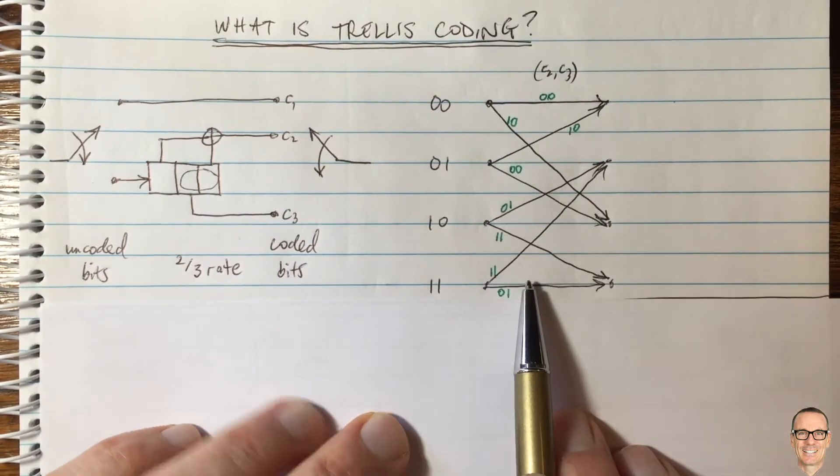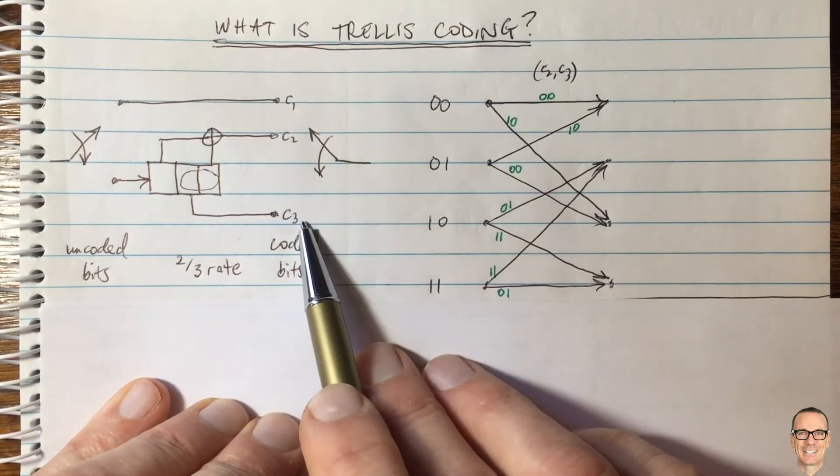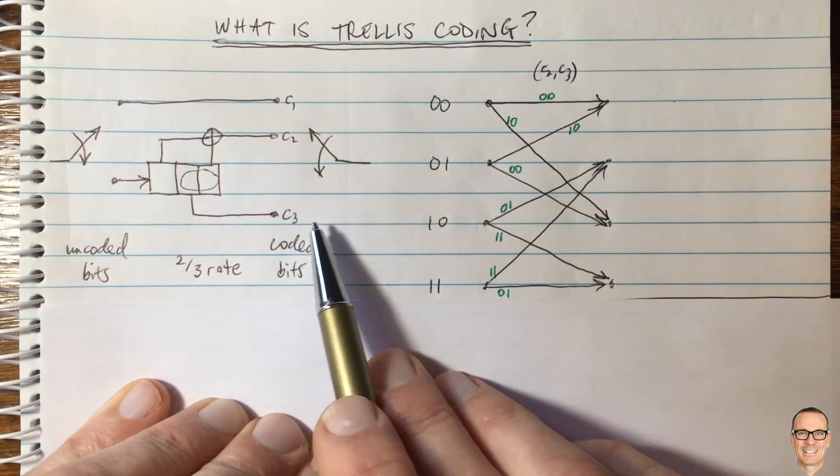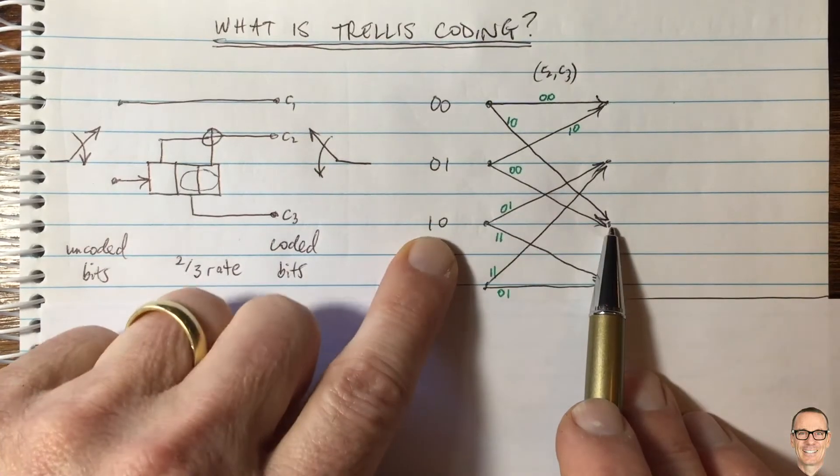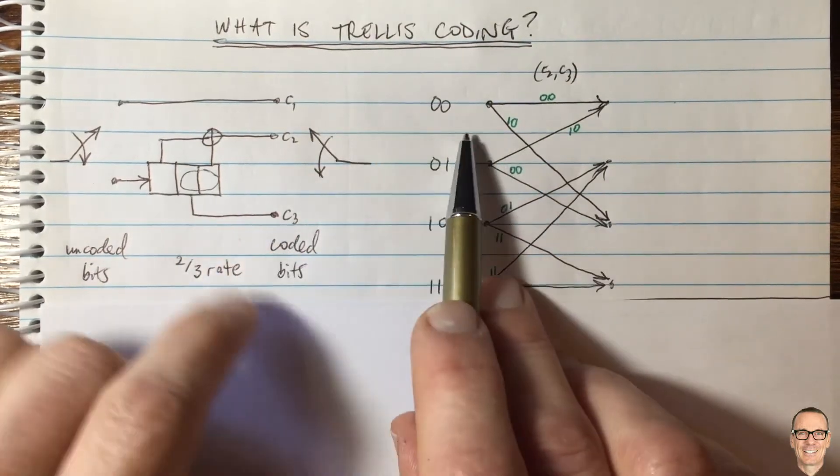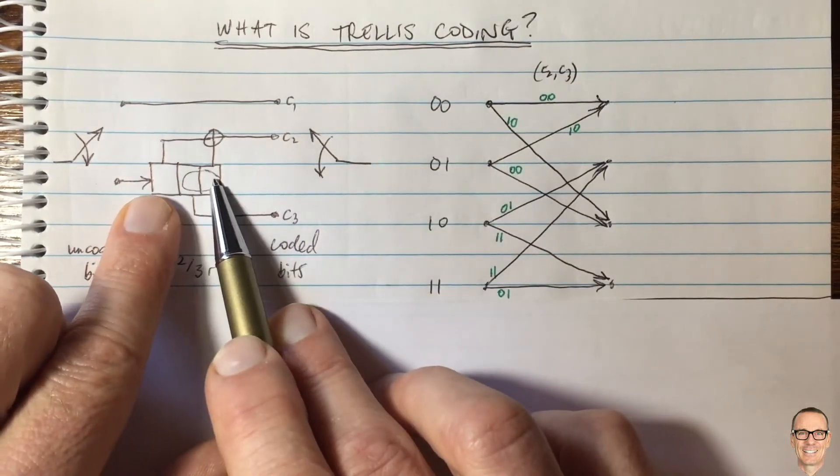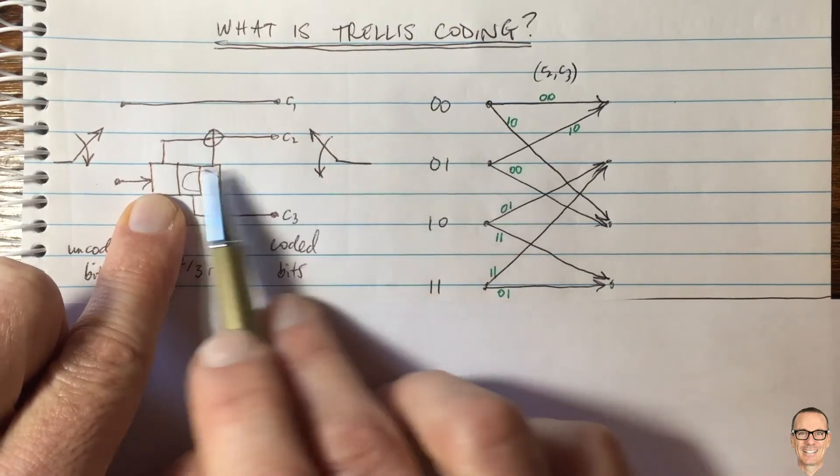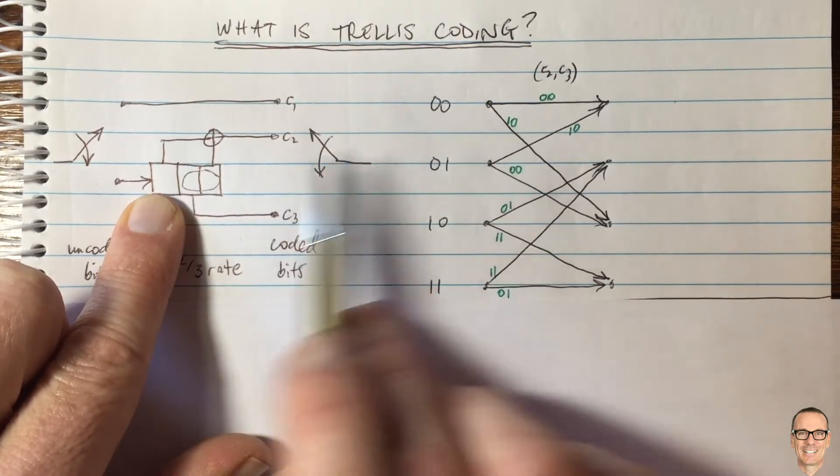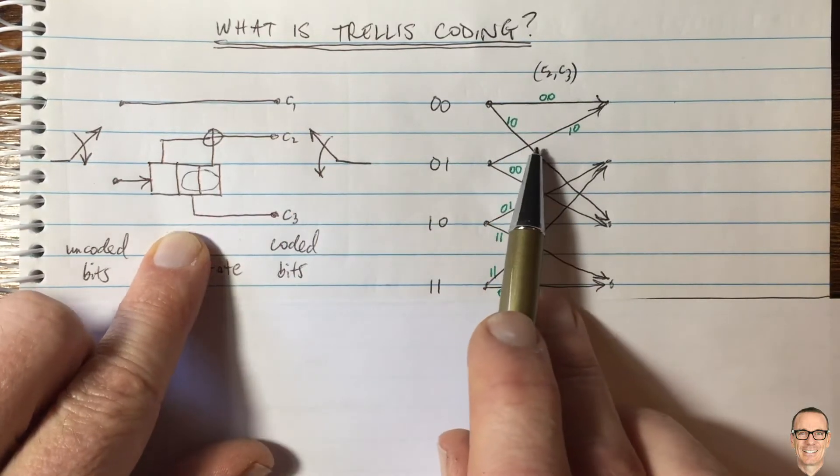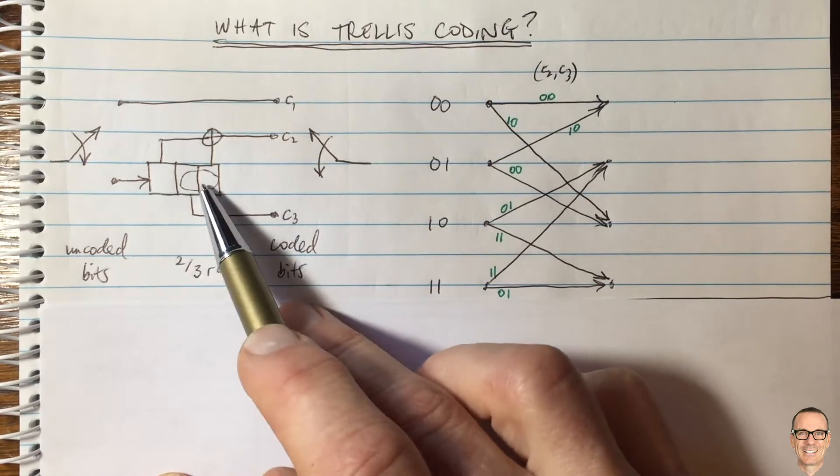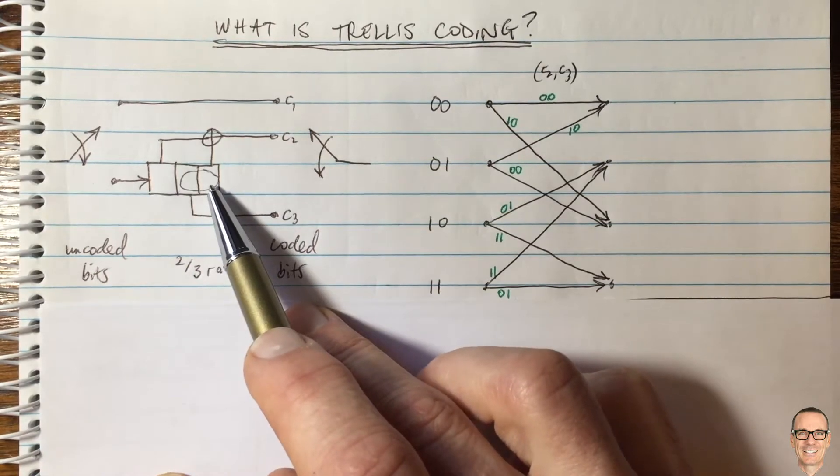And in green I've shown the values of the coded bits 2 and 3 in each of these time slots. So if it made this transition here from 00 to 10, then we would have 100 in the shift register and the output of C2 would be 1 and the output from C3 would be 0. I've shown them here. So this is a standard trellis for this standard three element shift register.